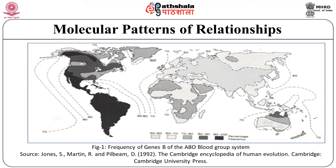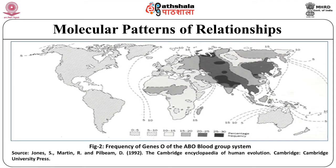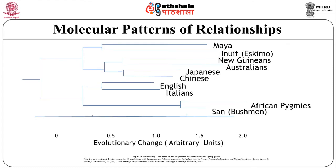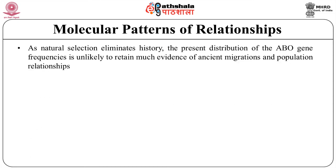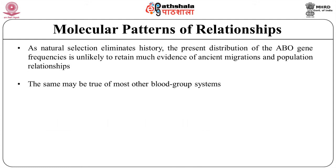Figure 1 depicts the frequency of gene O of the ABO blood group system. Figure 2 shows the frequency of gene B of the ABO blood group system. An evolutionary tree based on the frequencies of 58 different blood group genes is presented in Figure 3. As natural selection eliminates history, the present distribution of the ABO gene frequencies is unlikely to retain much evidence of ancient migrations and population relationships. The same may be true of most other blood group systems.